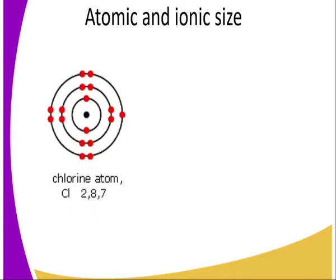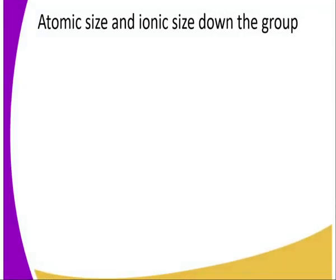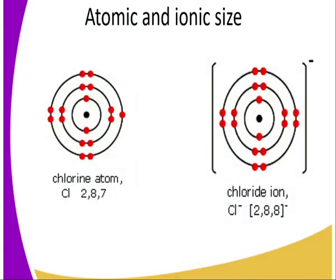Looking at atomic and ionic size down the group: the chlorine atom with electronic configuration 2, 8, 7 forms a chloride ion by gaining one electron in the outermost energy level. When comparing atomic size and ionic size, since the ion is formed by gaining an electron, there is repulsion between the incoming electron and the existing electrons. This makes the ionic size bigger compared to the atomic size.